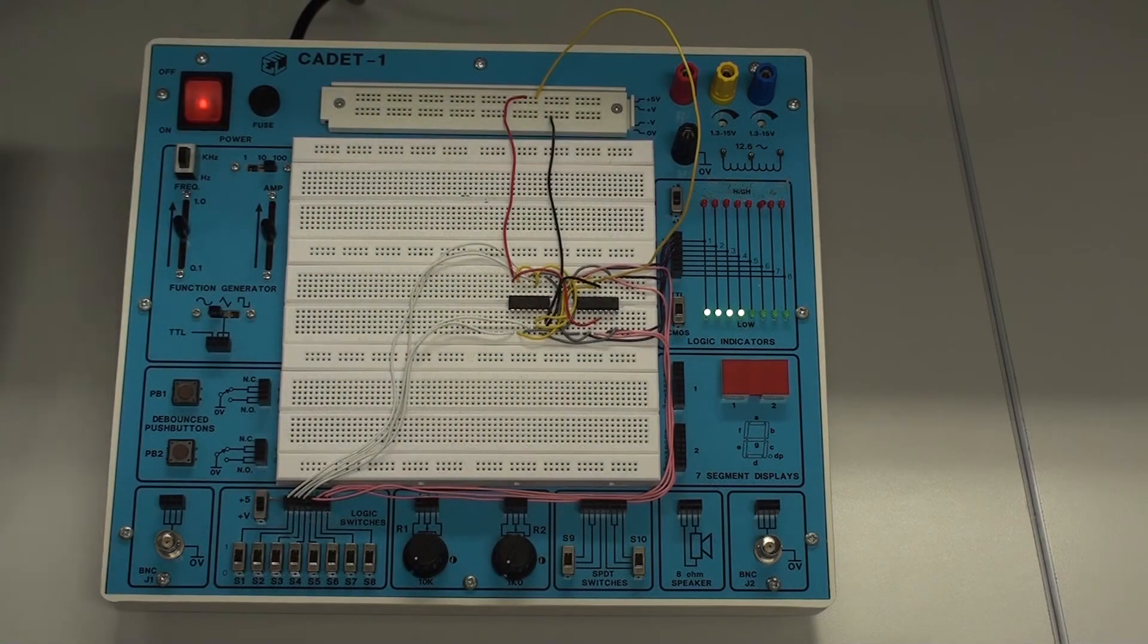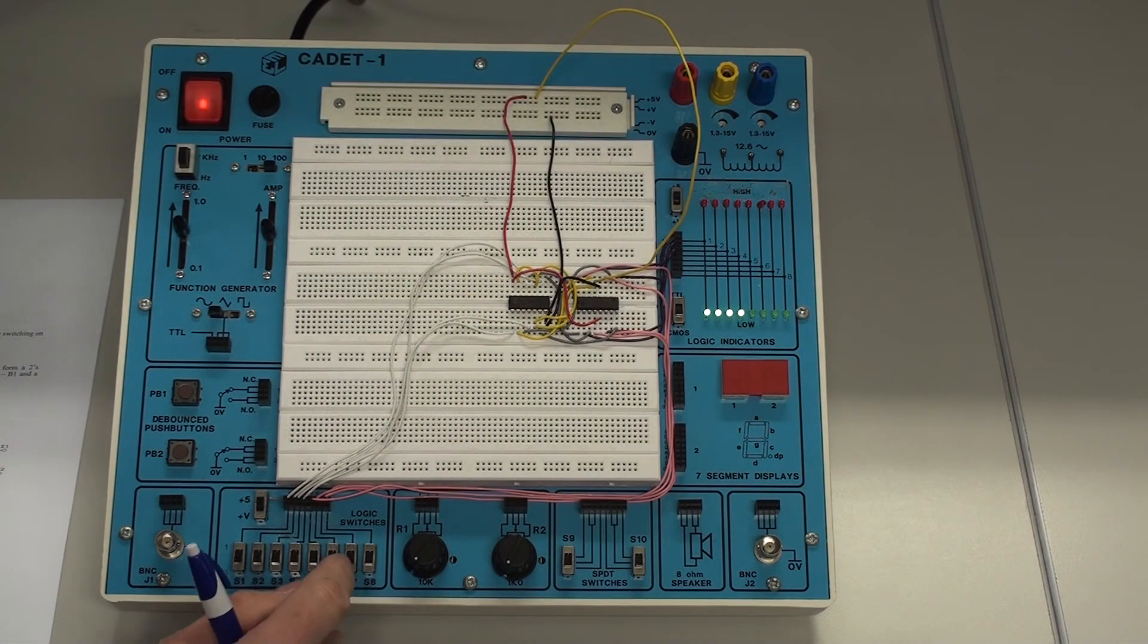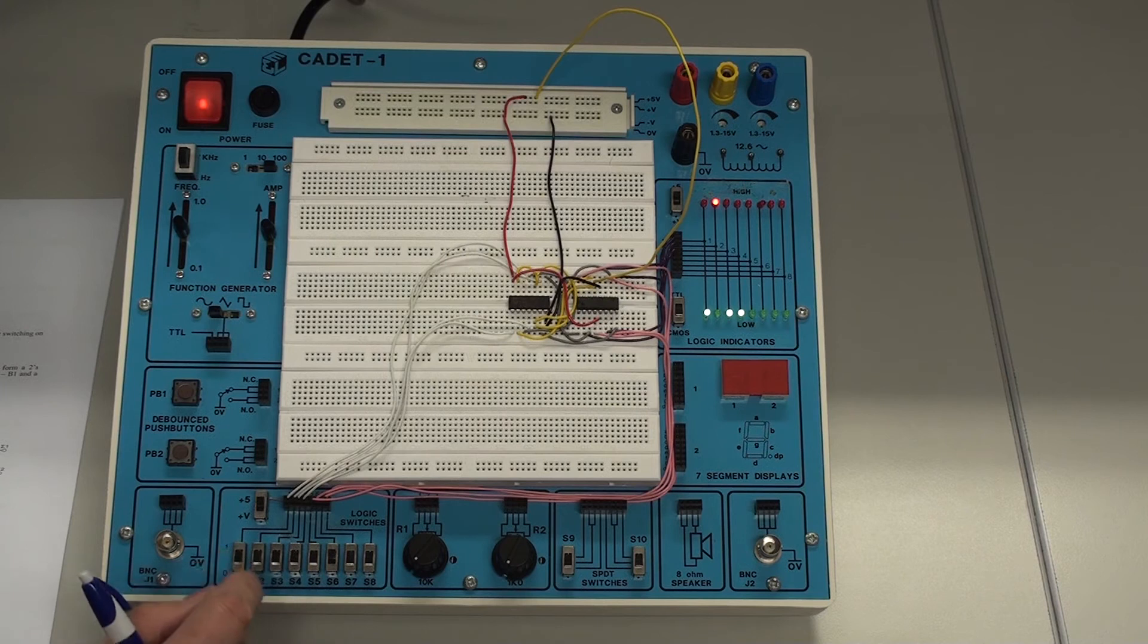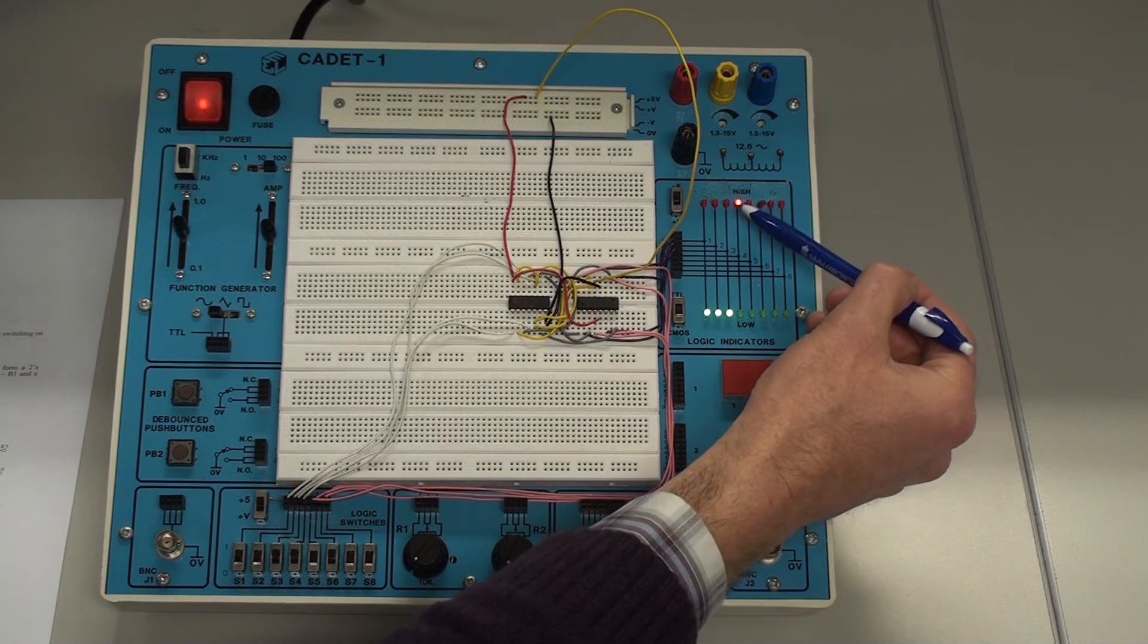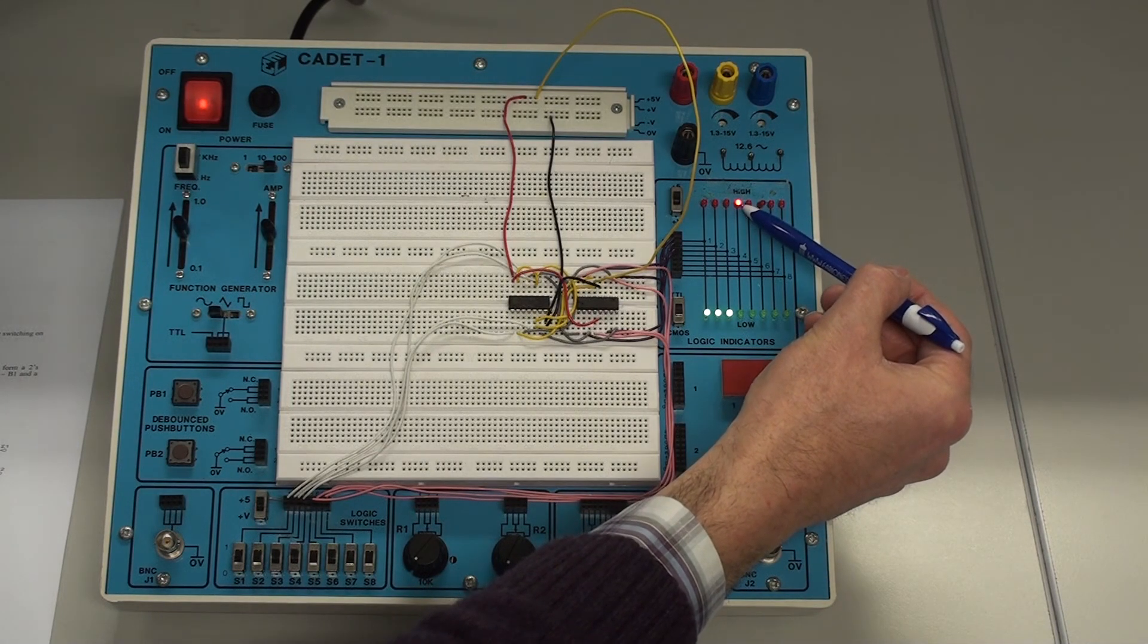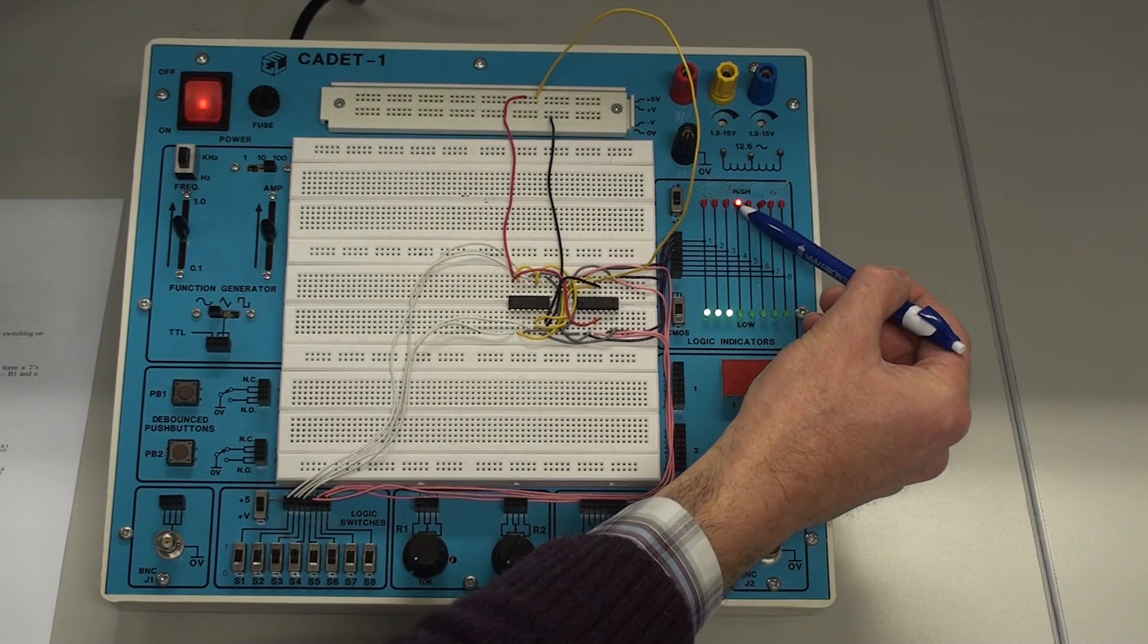So in this mode, we can set B to, say, four. And if we set A then to three, four minus three is one. So we can see that it is subtracting the two numbers.